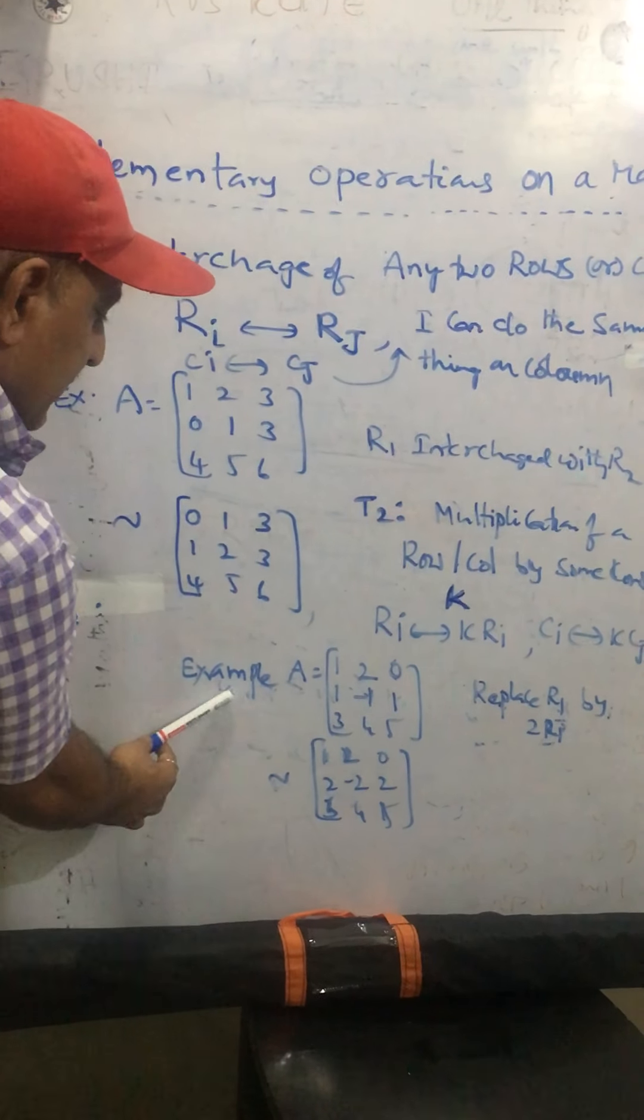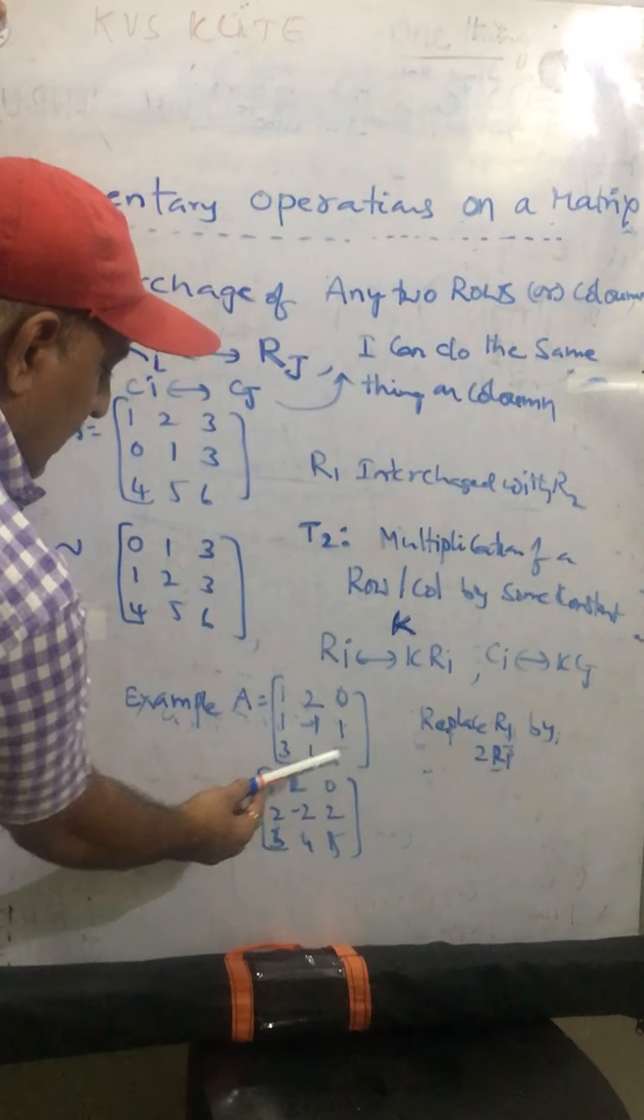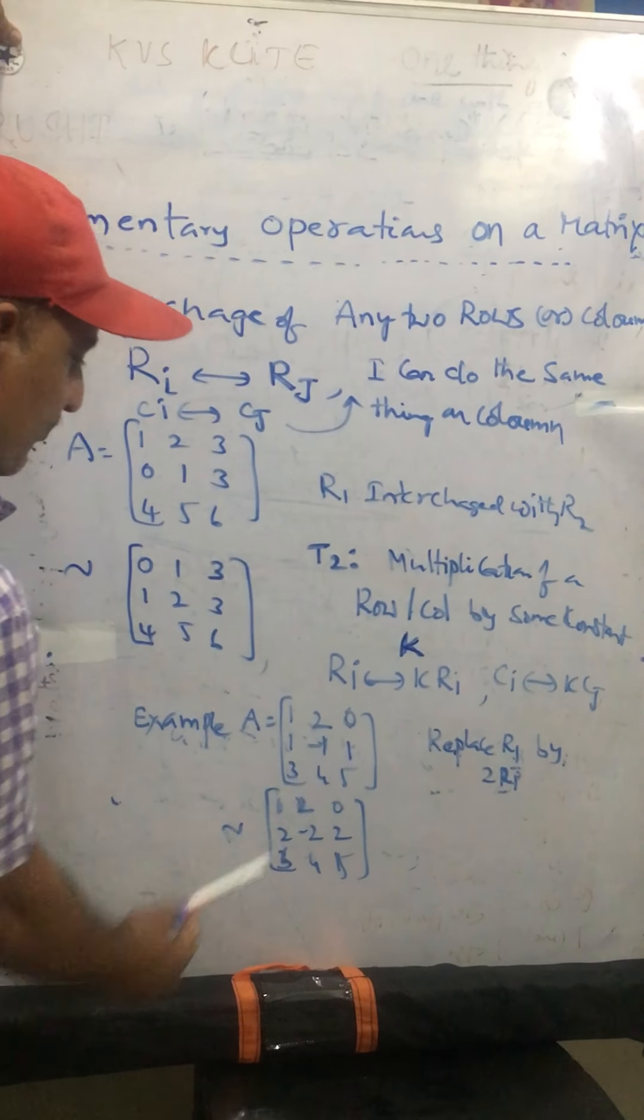For example, matrix A is given by 1, 2, 0, and 1, minus 1, 1, and 3, 4, 5.